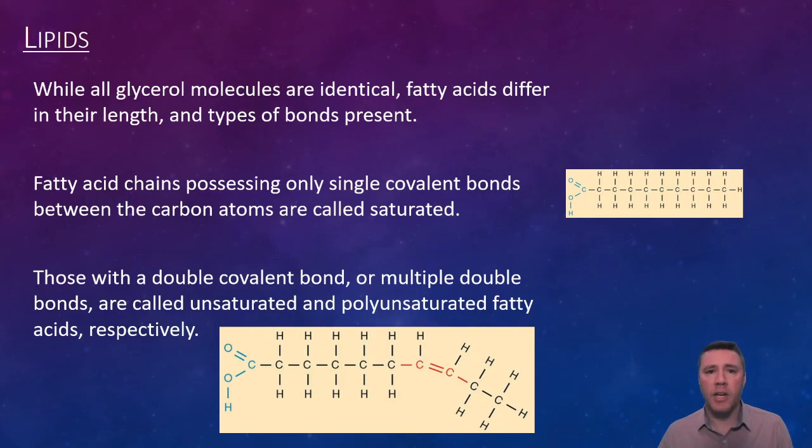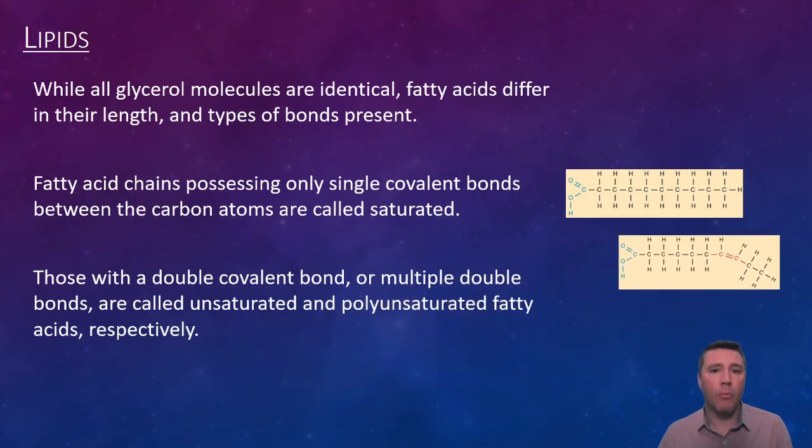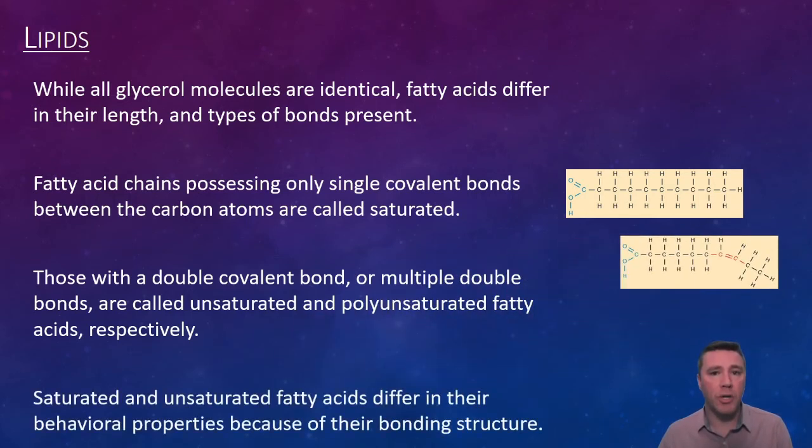Saturated and unsaturated fats have different chemical properties because of their bonding structure. Saturated fats are more prevalent in animal tissues, tend to be solid at room temperature, and are more easily stored by cells thanks to their flat linear nature. Unsaturated fats are more commonly found in plant tissue, tend to be liquid at room temperature, and because of the bend caused by the double bond present, are not as easily stored in cells.